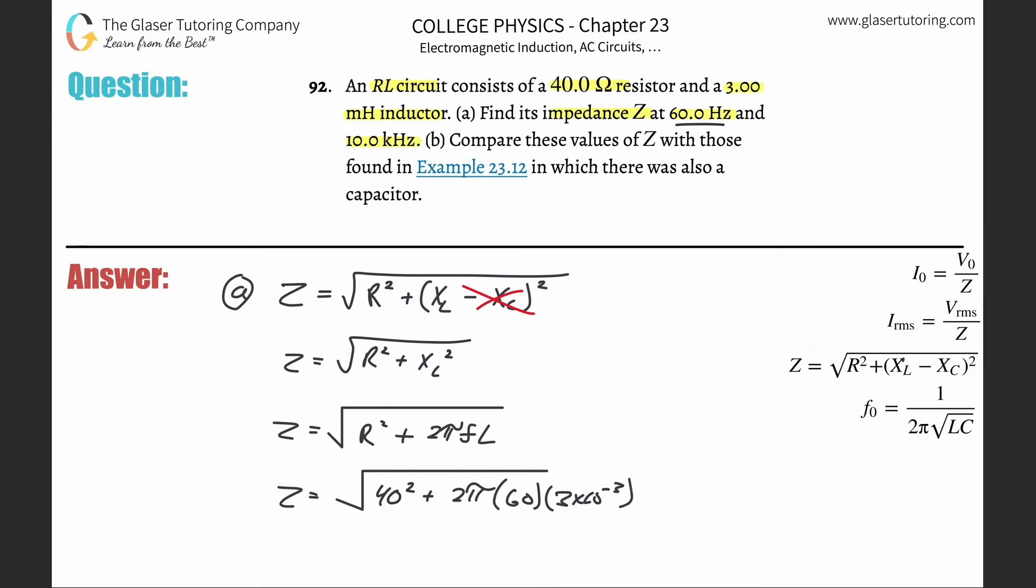And then the other calculation here is going to be the same exact thing: root of 40 squared plus 2π times now the new frequency 10 kilohertz. But we need that in hertz, so we would convert that into hertz: 10 times 10 to the positive 3. Then this would be 3 times 10 to the minus 3, but they would just cancel, so it'd be really just 10 times 3. So basically now we're going to just calculate it.